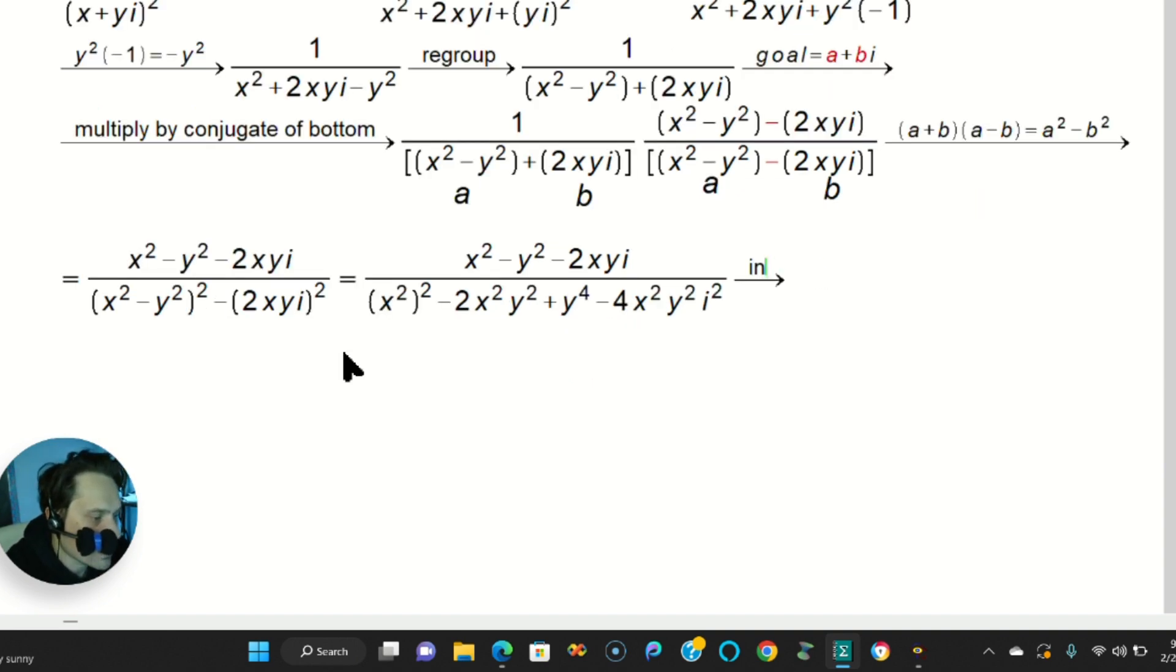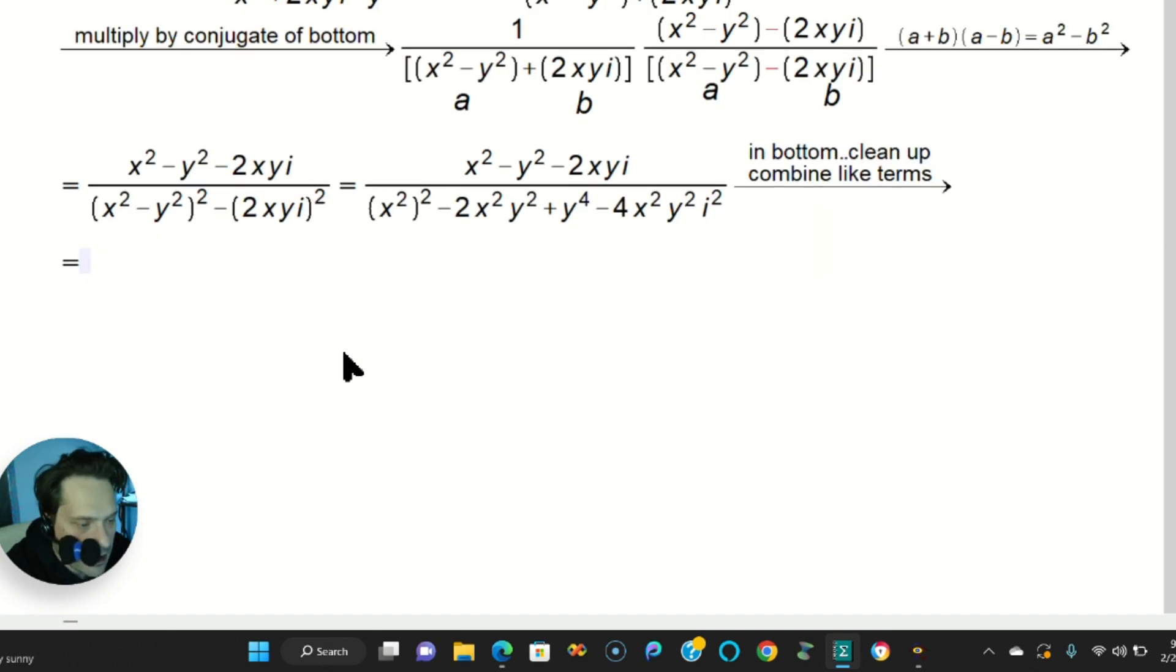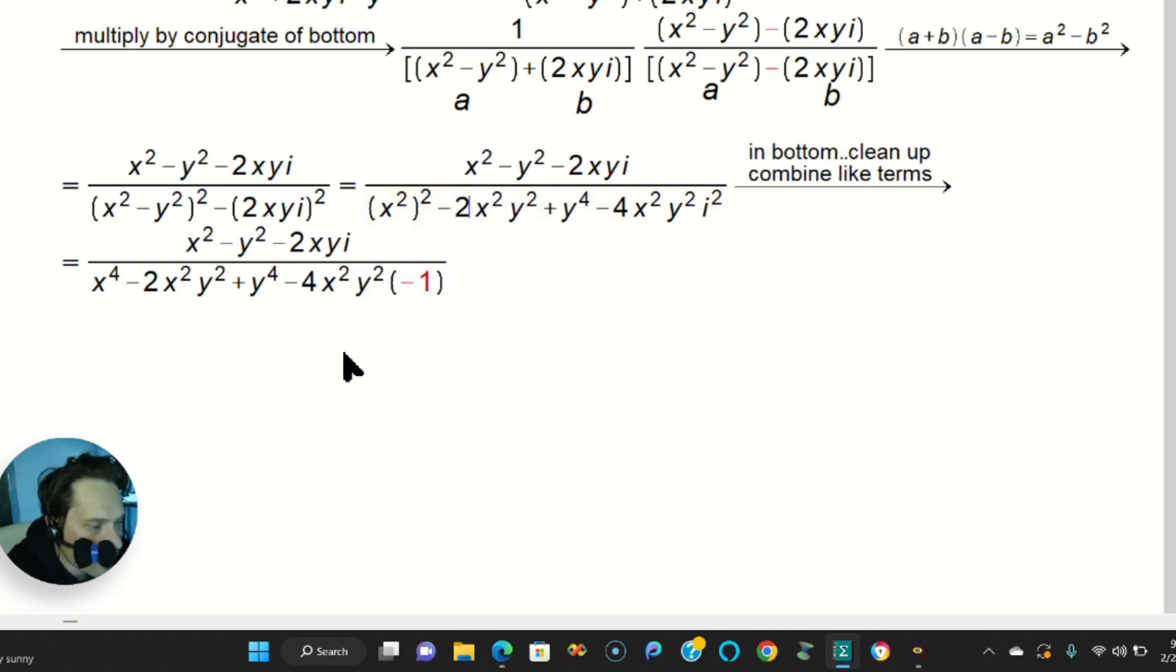And bottom, what do you have to do? That's actually quite a lot. So that means usually, let's see, combine like terms. That's what it means. Okay, so let's do that in the bottom now. And keep the top for now. So x squared minus y squared minus 2xyi. And then you have x to the 4th minus 2x squared y squared, plus y to the 4th. And then minus 4x squared y squared. And then, again, that's going to become negative 1 one more time. Right here. See this part? That's going to become negative 1 one more time.